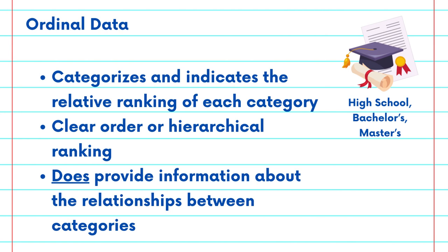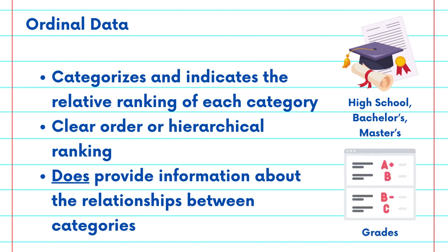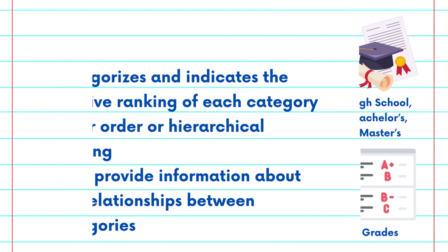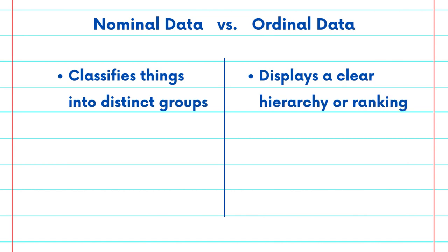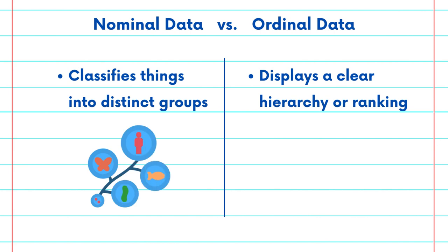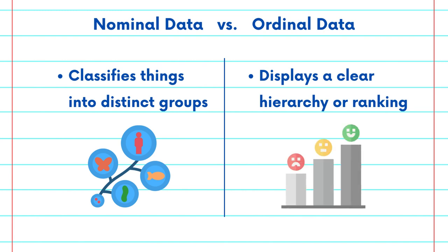Unlike nominal data, ordinal data not only categorizes, but also indicates the relative position or ranking for each category. Both nominal and ordinal data have practical applications. Nominal data is useful for classifying things into distinct groups, like in market research to segment customers by gender or in biology to categorize species. On the other hand, ordinal data is invaluable in situations where there is a clear hierarchy or ranking, like in surveys where respondents rate their satisfaction from very dissatisfied to very satisfied.